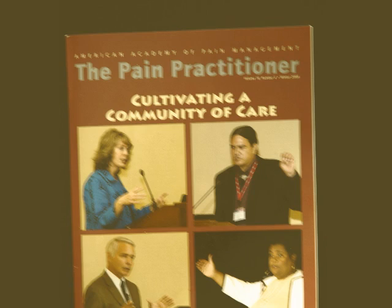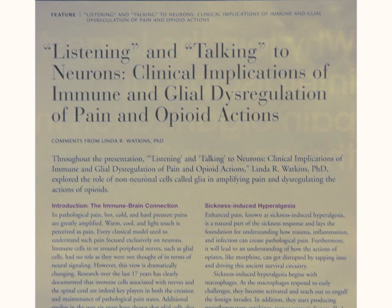The latest development that prompted this video is a very interesting article in The Pain Practitioner about glial cells by Linda Watkins, PhD, at the University of Colorado. What Dr. Watkins has found in her research is that we have glial cells in our spinal column, and these glial cells are on nerves. They can either inhibit different receptors coming through, which can modify pain. Her article gets more heavily involved in the chemistry of what goes on in the body with chronic pain, and it's very interesting.